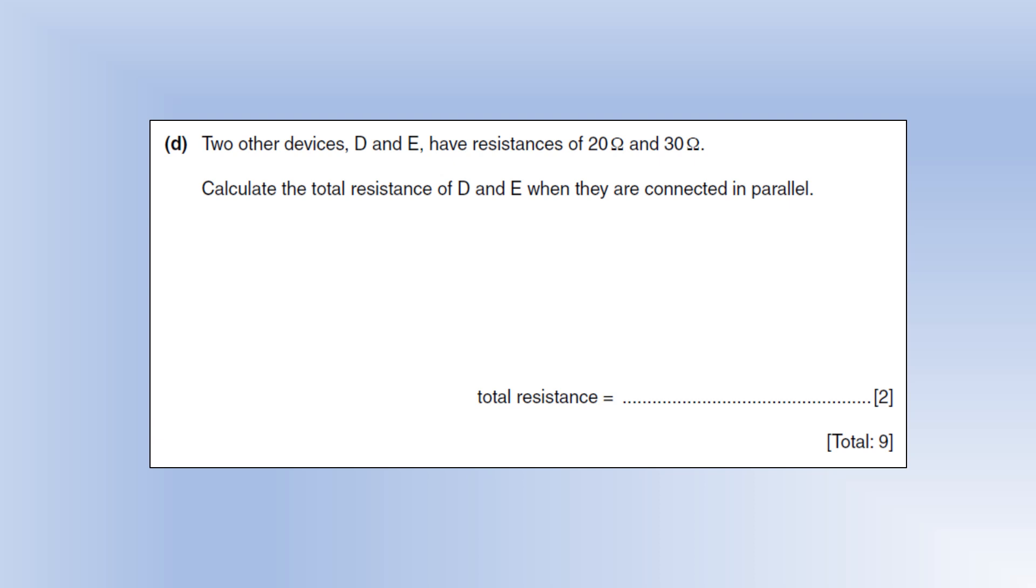Two other devices D and E have resistances 20 and 30 ohms. Calculate their resistance when they're in parallel. We're going to use the reciprocal rule because they're in parallel. It's useful to simplify your fractions, or just type it into your calculator, but it gives us a total resistance of 12 ohms once we flip it back over, which is the stage people often forget.